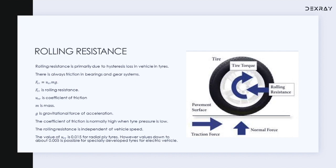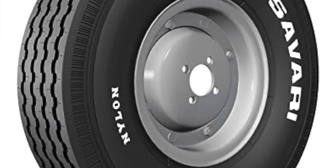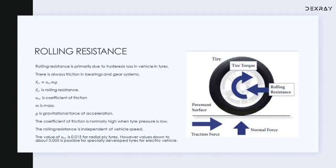There are different types of tires available in the market, each with different values of coefficient of friction. For example, a radial ply tire has a coefficient of friction value of 0.015. For some specially developed electric vehicles, the rolling resistance value has been reduced to 0.005 — that's very low. In short, rolling resistance only depends upon the mass of the vehicle, not the velocity. The coefficient of friction depends upon the surfaces in contact — in this case the road and tire surfaces — as well as the air pressure of the tire.